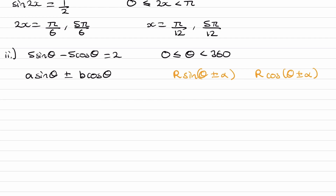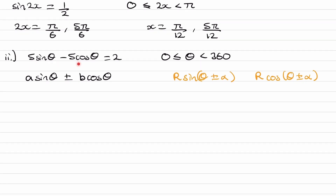To figure out which form to use, we think about the expansions of sine theta plus or minus alpha and cos theta plus or minus alpha, and determine which expansion matches what we have. What we have is a sine minus a cos, so we need to think about which addition formula expansion gives us a sine minus a cos — and that would be R sine theta minus alpha.